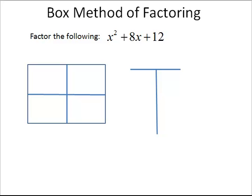We will be using the box method of factoring to factor the given trinomial. Before we factor the following, be sure that you have already pulled out the greatest common factor, if necessary. Looking at x squared plus 8x plus 12, we don't have a GCF to pull out, so we continue.